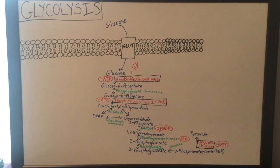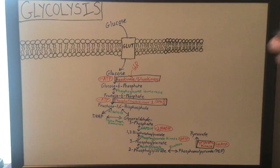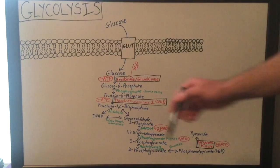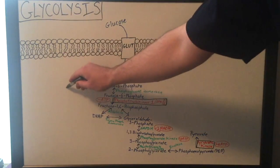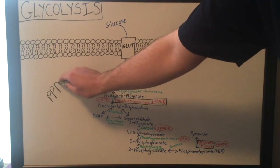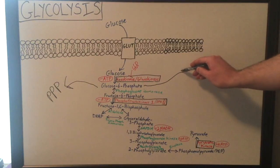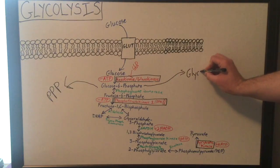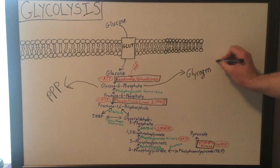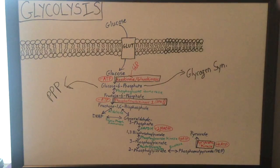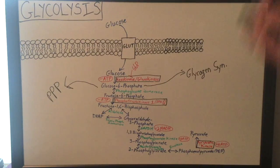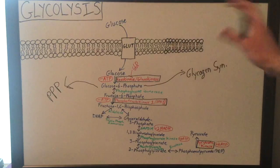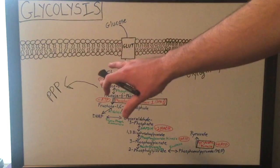Once the cell has glucose 6-phosphate, it can do a few different things with it. It can run the glycolysis pathway, it can go into the pentose phosphate pathway (PPP), or it can actually be diverted into glycogen synthesis. That'll depend on what the energy demands of the cell are. I just want to mention that glucose 6-phosphate can be diverted into not just glycolysis, but also glycogen synthesis or the pentose phosphate pathway.